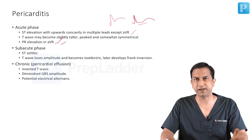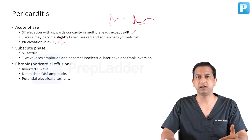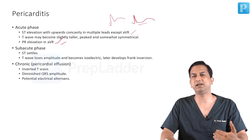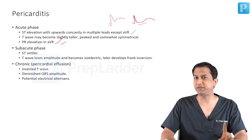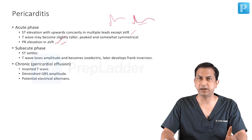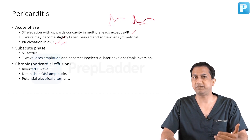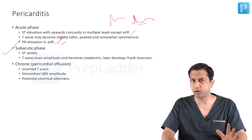In the subacute phase, when the pain has settled, what happens is the ST settles and the T wave loses amplitude, becomes isoelectric, and later develops frank inversion. ST elevation with T wave inversion cannot be seen simultaneously in a patient with acute pericarditis — the T wave starts to change or invert only when the ST has settled. This is the subacute phase, and this is an important difference.